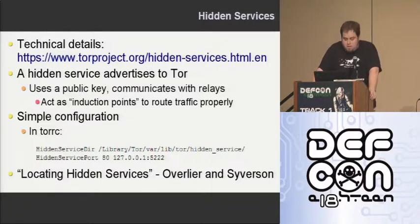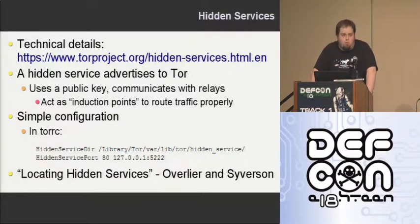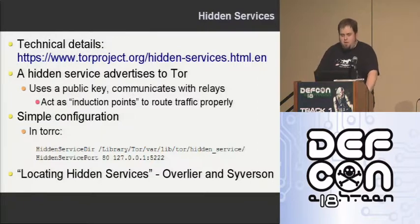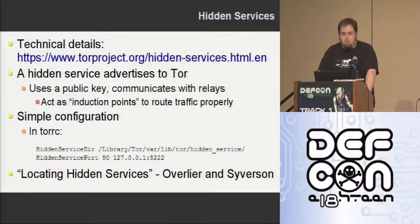The other line is the hidden service port. This is very simple — it's just like creating a firewall rule. You provide it the port you want to run on; in this case they're using 80, so it's pretty much a web server. The web server itself on the system is running on localhost port 5222. Once you put those in your torrc file and restart Tor, everything will work just fine.